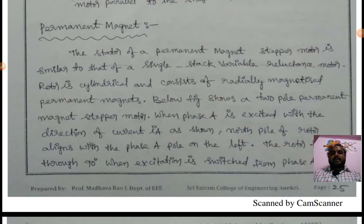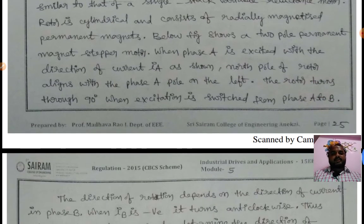In permanent magnet motor, the stator is similar to that for single-stack variable reluctance motor. The rotor is cylindrical and consisting of radially magnetized permanent magnets as shown in the figure. When phase A is excited with the direction of current IA as shown in figure, north pole of rotor aligns with the phase A pole on the left.